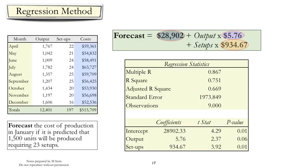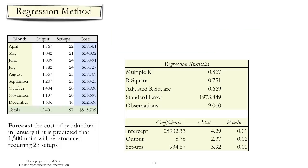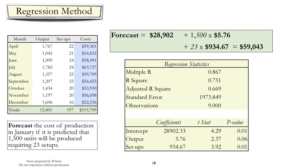So now we have the full cost equation. We can now use it to estimate the expected costs if, in a month, 1,500 units were going to be produced and we expected 23 setups to be used. So we would substitute into the cost equation $1,500 for the amount of output, 23 for the number of setups, and we can see that, under these circumstances, the total cost is expected to be equal to $59,043.